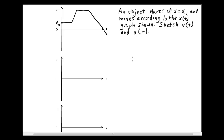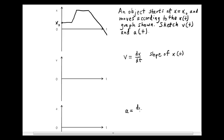We need to use what we've learned about slope in order to do this. Velocity, written in calculus notation as dx/dt, is the slope of the x(t) graph. In much the same way, acceleration — the time rate of change of velocity, or the derivative of velocity with respect to time — is the slope of the velocity versus time graph.